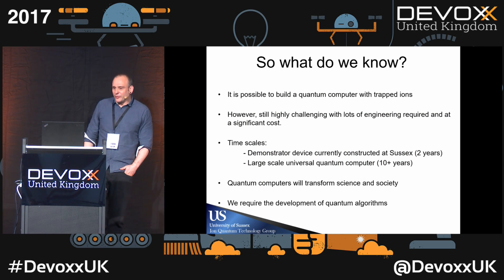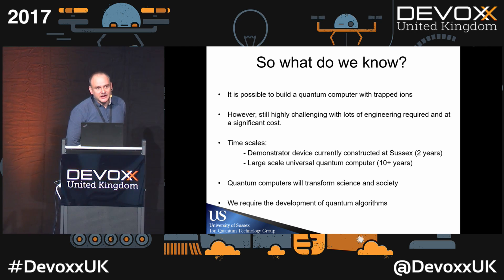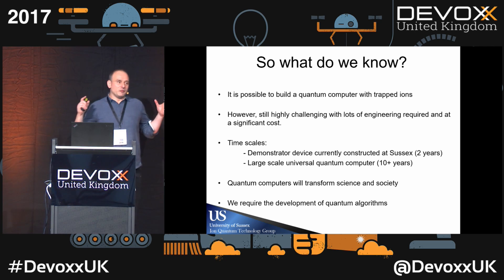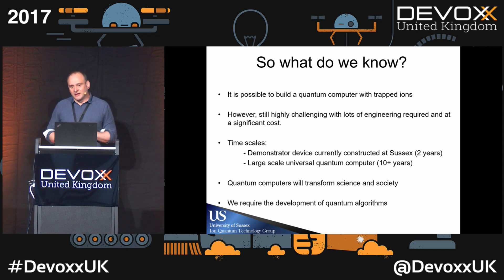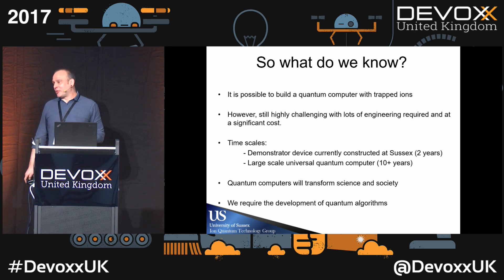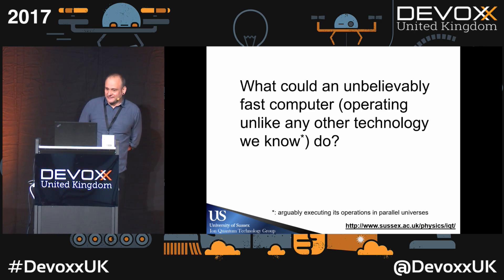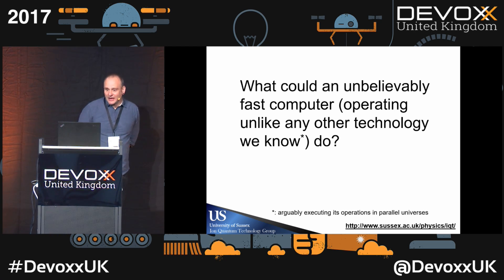It is possible to build a quantum computer using trapped ions — we now have all the technology available, though it is still highly challenging and comes at significant cost. We are building a demonstrator device at the University of Sussex in the next two years, and beyond that we will build a large-scale quantum computer that may occupy a whole football pitch or a building. Quantum computers will certainly transform society and you will see them eventually. We do require more people to write quantum algorithms, and I'd like to end by asking: what could an unbelievably fast computer, operating unlike any other technology we know, actually do?